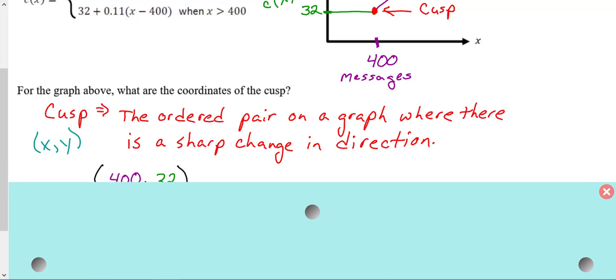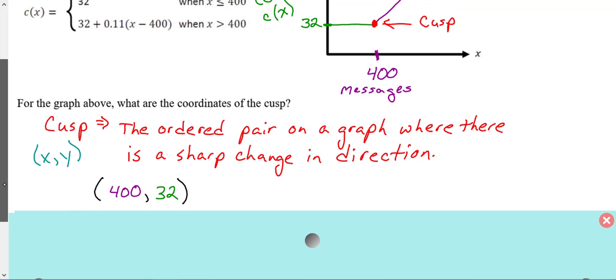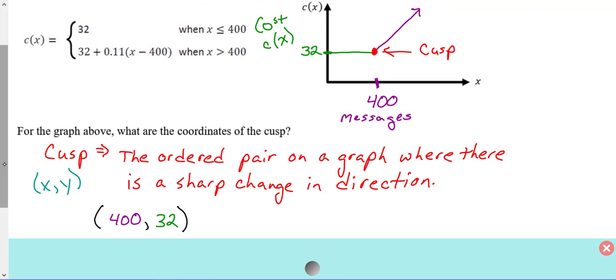So in our ordered pair, the first number is going to be 400, and the second number is going to be 32.